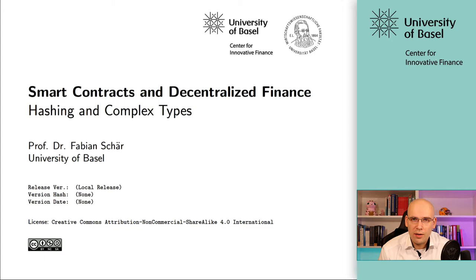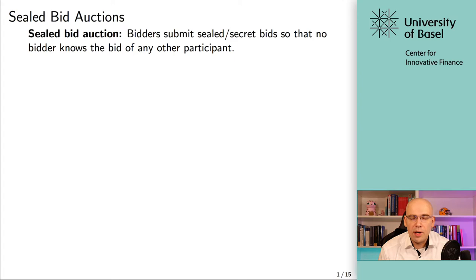Let's get started. As always, we will build on our auction contract. So far, we haven't hidden any sort of information in that auction contract. Whenever somebody made a bid, then everyone could just see that bid, everyone could see what address it came from, and so on.